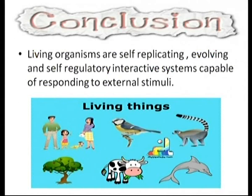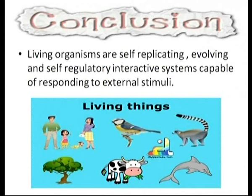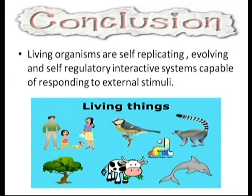In conclusion, living organisms can be defined as: self-replicating (DNA can replicate and give rise to new individuals), evolving (changing from simpler to complex forms), and self-regulatory interactive systems — meaning living beings can regulate some of their systems and are capable of responding to external stimuli. This is the complete definition of a living being.